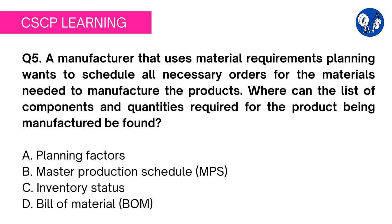MPS gives you production information about the whole product and related quantities, so this is not an appropriate answer. Option C: inventory status — you cannot find out the ingredients to manufacture a product by checking the inventory status, so this is an absolutely irrelevant choice. We are left with option D only, so it is quite evident that option D is the right answer.